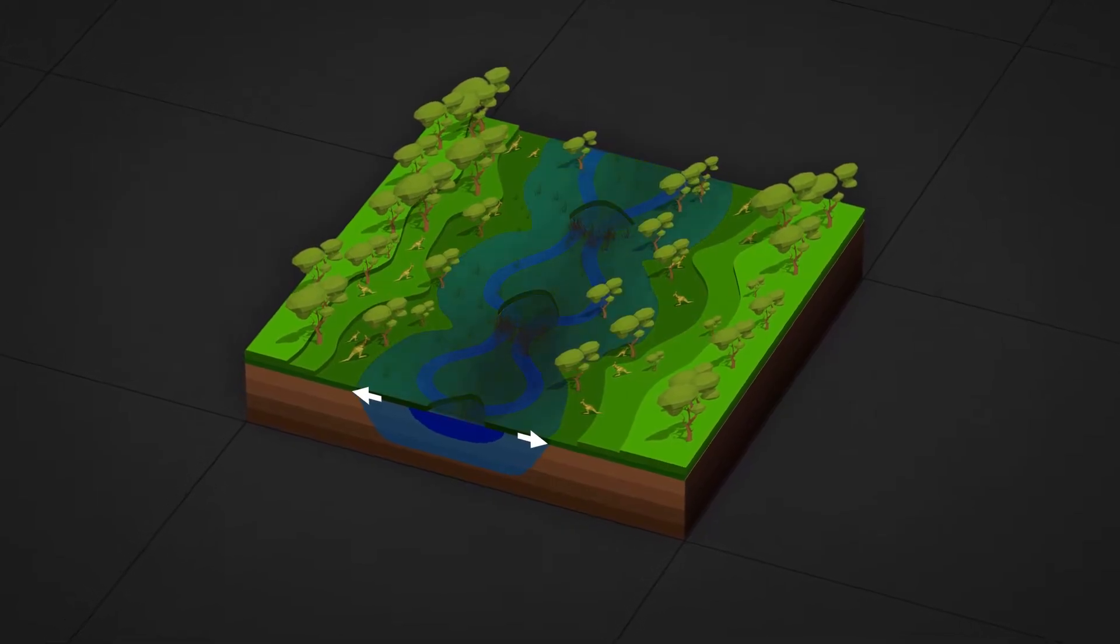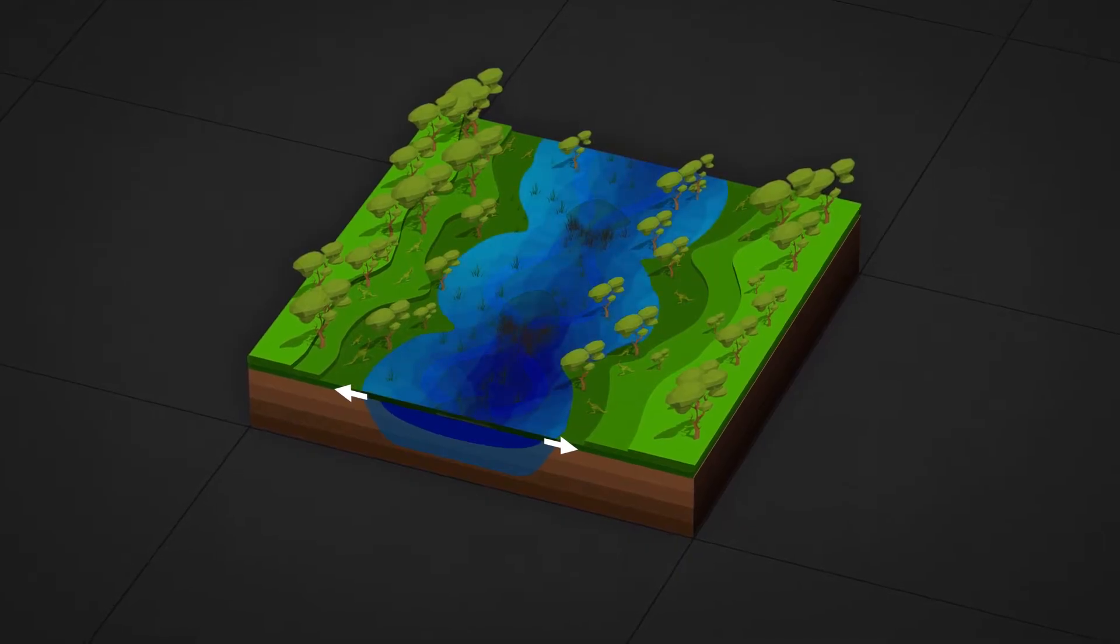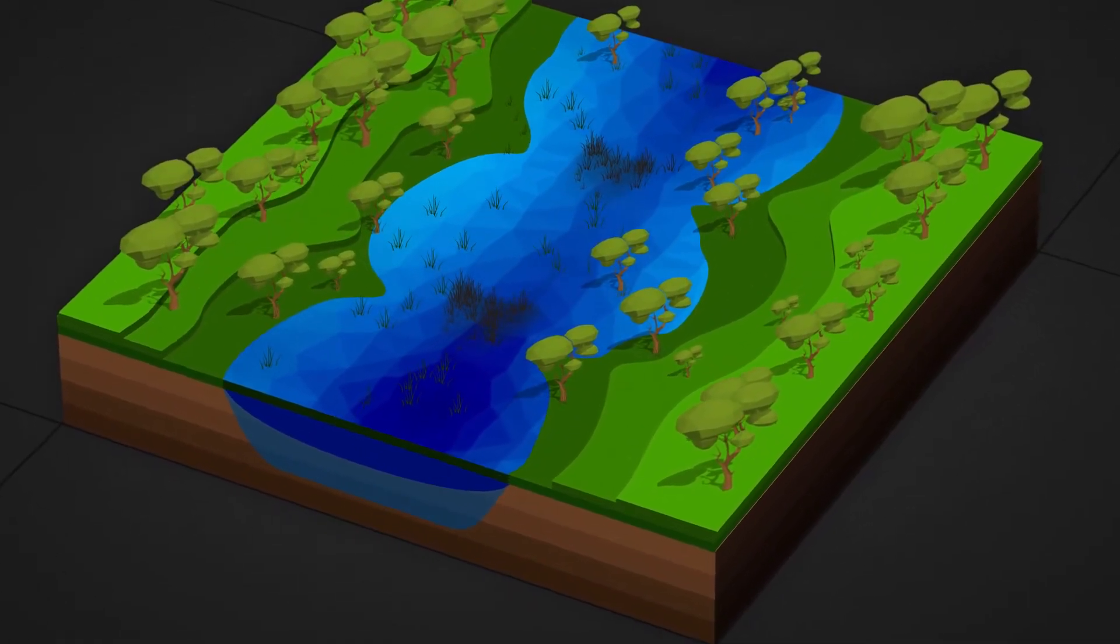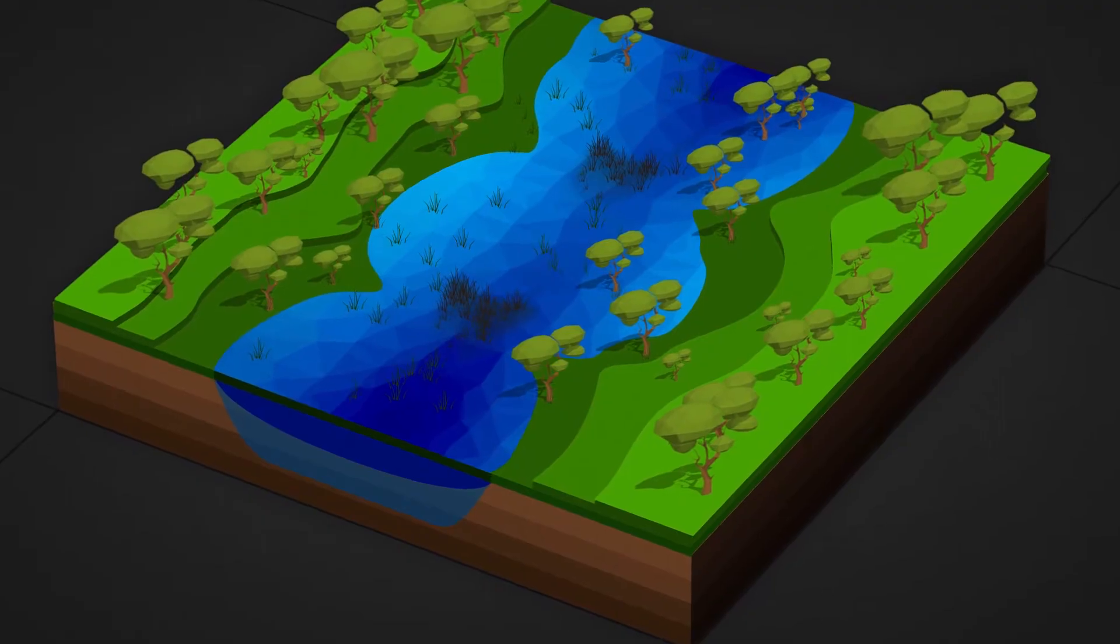In wet times the flow spread out across the floodplain and valuable nutrients were captured and recycled by the dense vegetation. These rich, fertile floodplains were widespread.